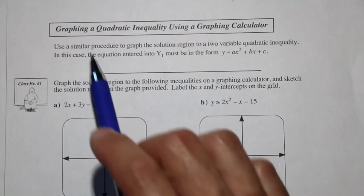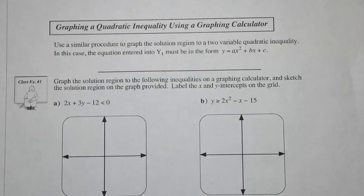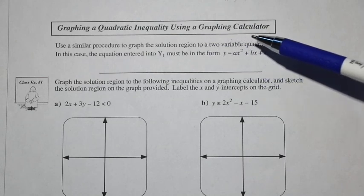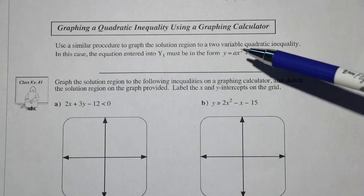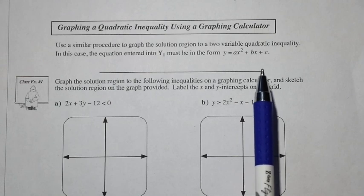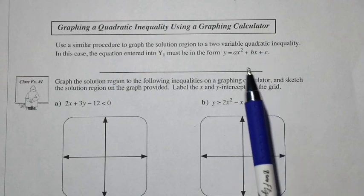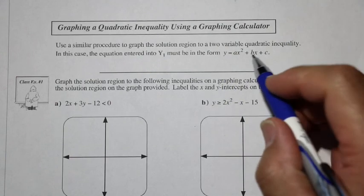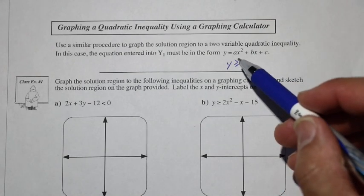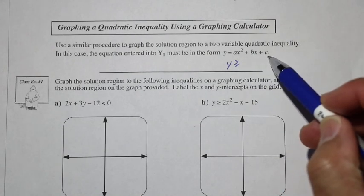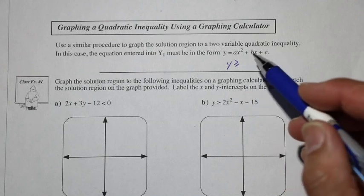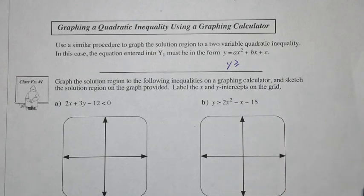Next, we graph a quadratic inequality using a graphing calculator. We can use a similar procedure — we've already graphed quadratic equations this way. The only change is to toggle the option to the left of y1 to either top shade or bottom shade. Remember: top shade means y is greater than or greater than or equal to the quadratic expression; bottom shade means y is less than or less than or equal to it.